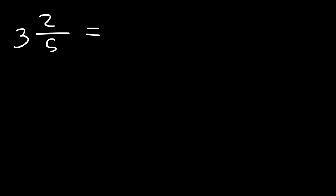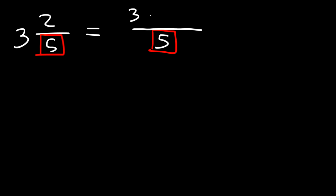To convert a mixed number into an improper fraction, the first thing you need to do is rewrite the denominator — it will not change. The second thing is to multiply the whole number by the denominator, then add the numerator to that product.